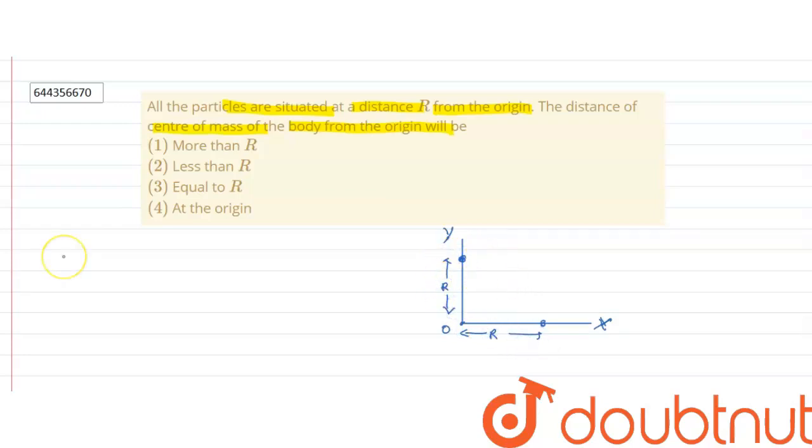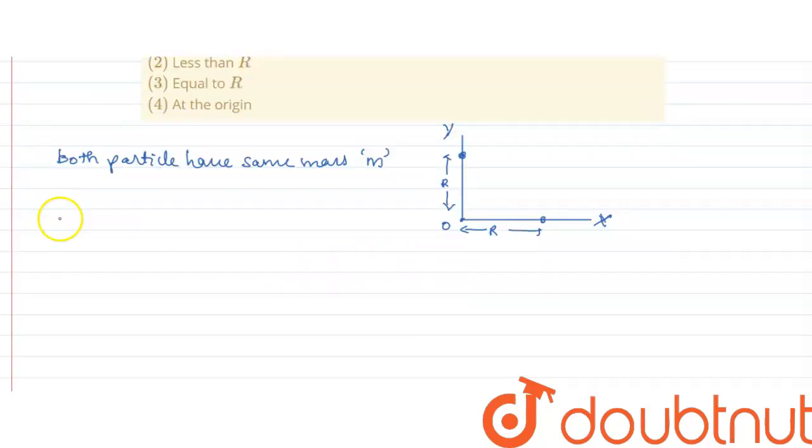And suppose both the particles have same mass, that is M. Now, center of mass along x-axis is x₁m₁ plus x₂m₂, upon m₁ plus m₂.